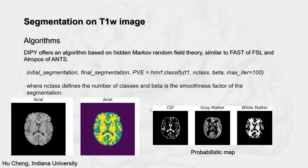DIPI offers a simple tool to perform segmentation on T1-weighted images. The algorithm is based on hidden Markov random field theory, similar to FSL's FAST. You just run a simple command and it will output images of CSF, gray matter, and white matter — the probability maps of these three classes.